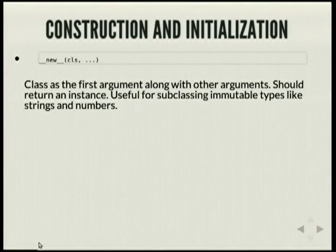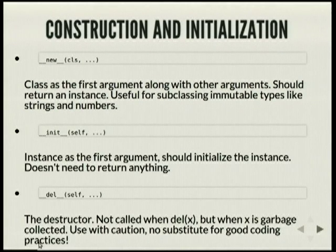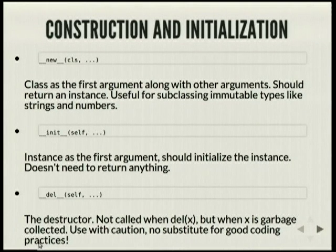Let's start with the basic magic methods. __new__ is used for creating a new instance. It's useful when you're subclassing immutable types, and this is the first thing that gets called when you create a new instance of a class. The next thing that gets called typically is __init__, which is supposed to initialize your instance. And similar to how __new__ and __init__ deal with constructing instances, __del__ deals with destruction.